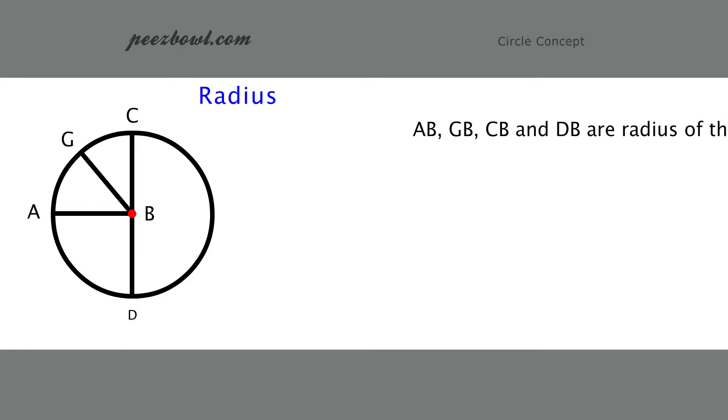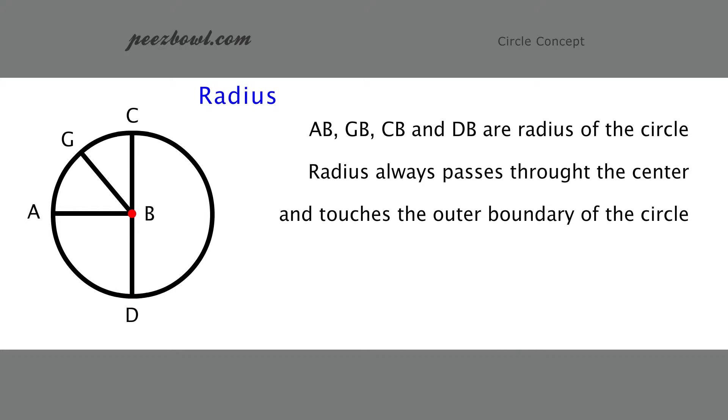These lines are called radius of the circle. Radius of the circle always passes through the center and touches the outer boundary of the circle.